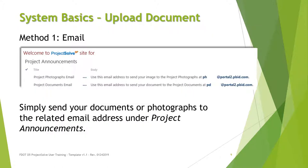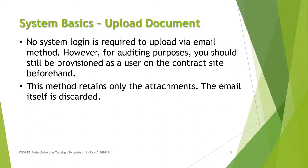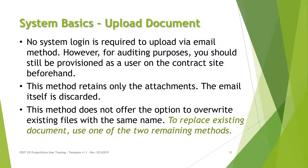Now we will go over uploading documents to the Project Solve contract site. You have three different methods you can choose to upload your documents. The first method is by email. On the contract homepage, you can find the appropriate email addresses listed under Project Announcements. An advantage to emailing documents is that no system login is required. However, anyone sending documents to PSSP should be a designated user for audit purposes. Remember that the site only retains the attachments from the email and not the email itself. A disadvantage of email is that you cannot overwrite or replace existing files with the same name. If you are trying to re-upload an existing document, you will need to use one of the other two methods.